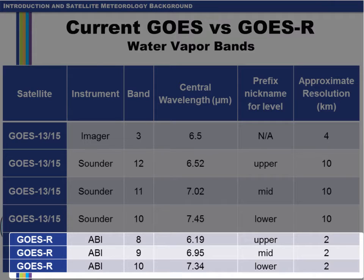Prefix nicknames have been given to each channel — upper, mid, and lower — to correspond to the layer of atmosphere it sees relative to each of the other bands. For example, the full name of the 6.95 micron band is the mid-level tropospheric water vapor band. The spatial resolution of each water vapor band is 2 kilometers, and the temporal resolution will be 5 minutes over CONUS, or even 1 minute in mesoscale sectors. In addition, the signal-to-noise ratio will improve considerably on the ABI water vapor channels, and in combination with the improved spatial resolution and bit depth, smaller scale features are more likely to be real and not artifacts due to noise. The ABI water vapor bands will be a significant improvement over what is currently available on the GOES imager and sounder instruments.